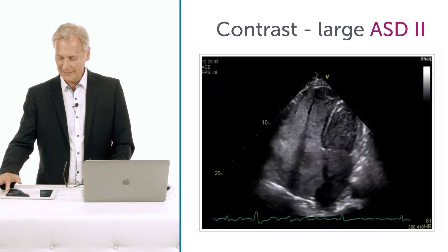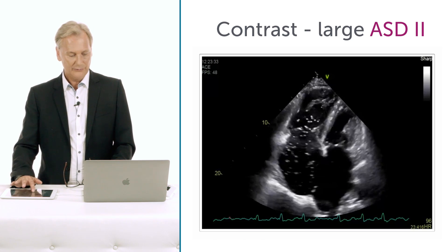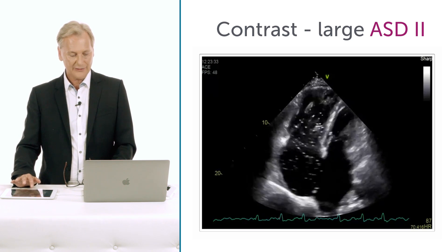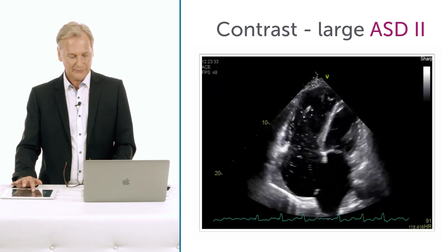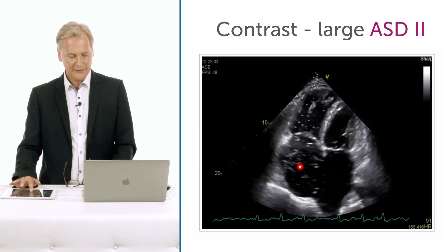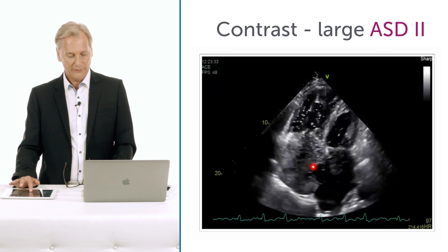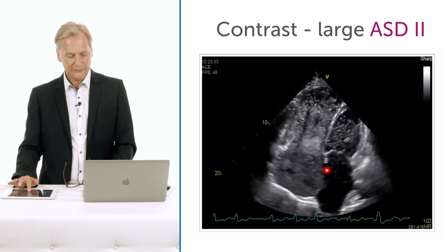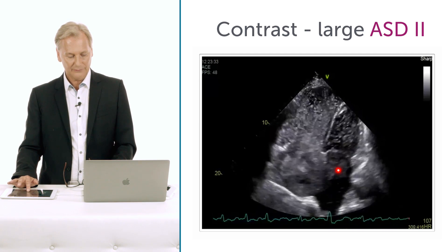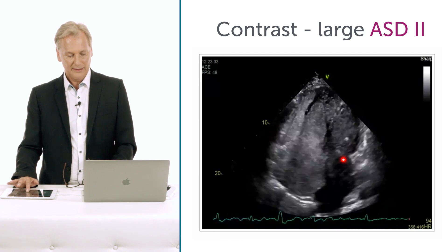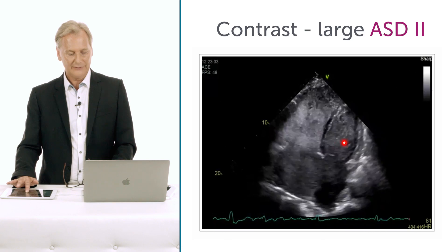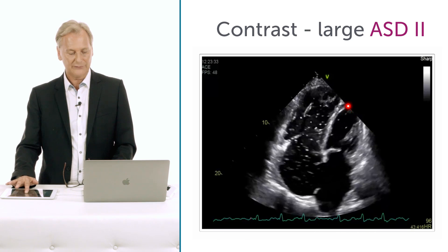What we nicely see here is that there is actually contrast opacification via this atrial septal defect right here, now into the left atrium and into the left ventricle.